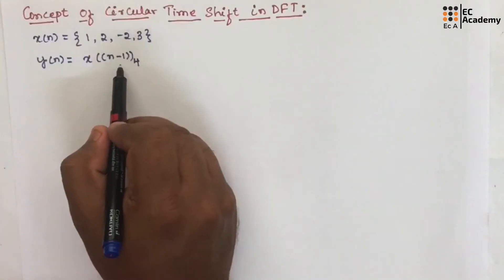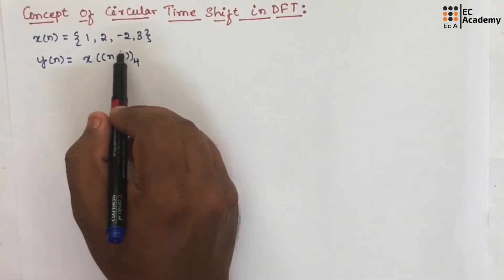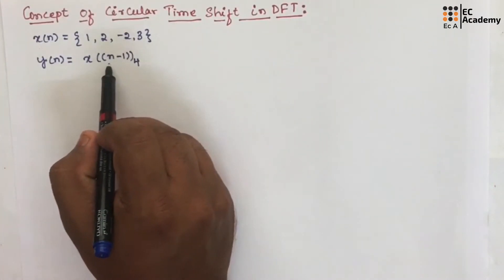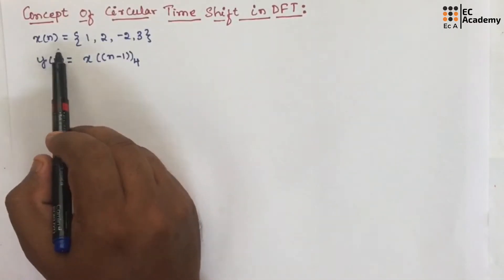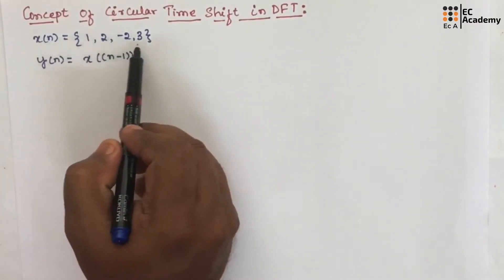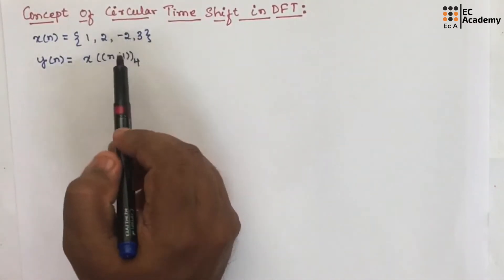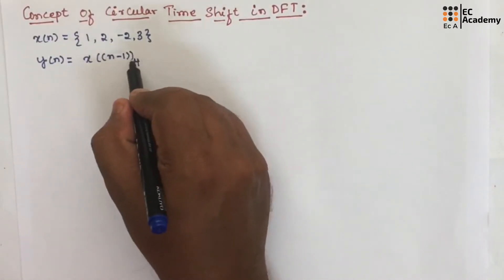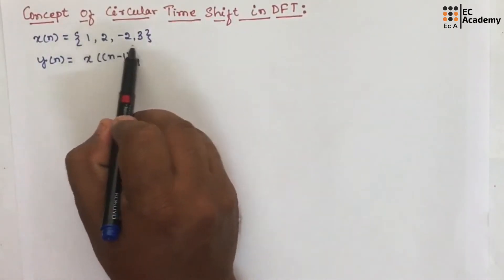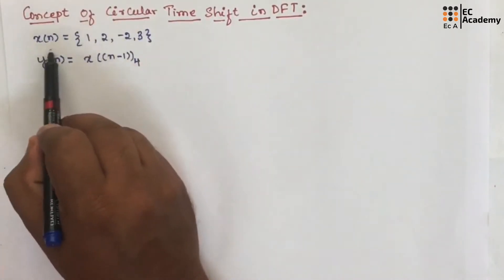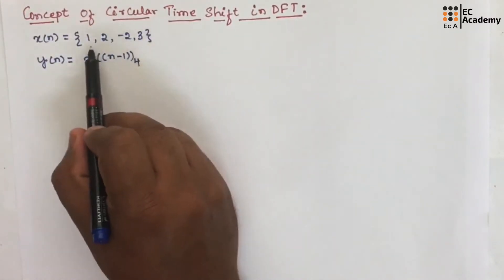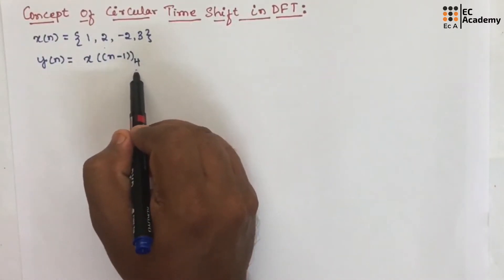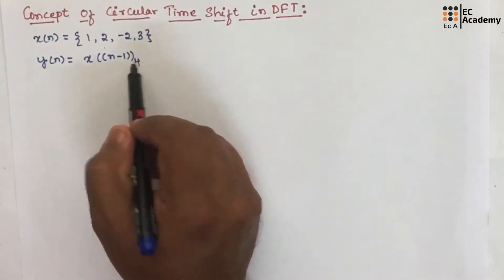So circular shift by 1 position. x of n is given here and we need to perform circular shift with 1 position. Here mod 4 represents the number of elements in the sequence x of n. The number of elements are 4, that is why here it is mod 4.